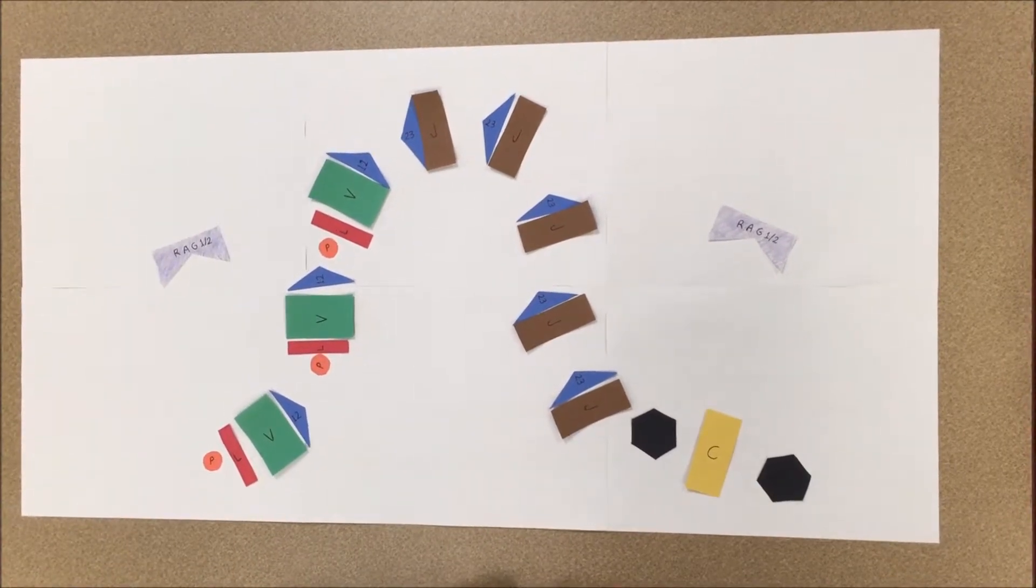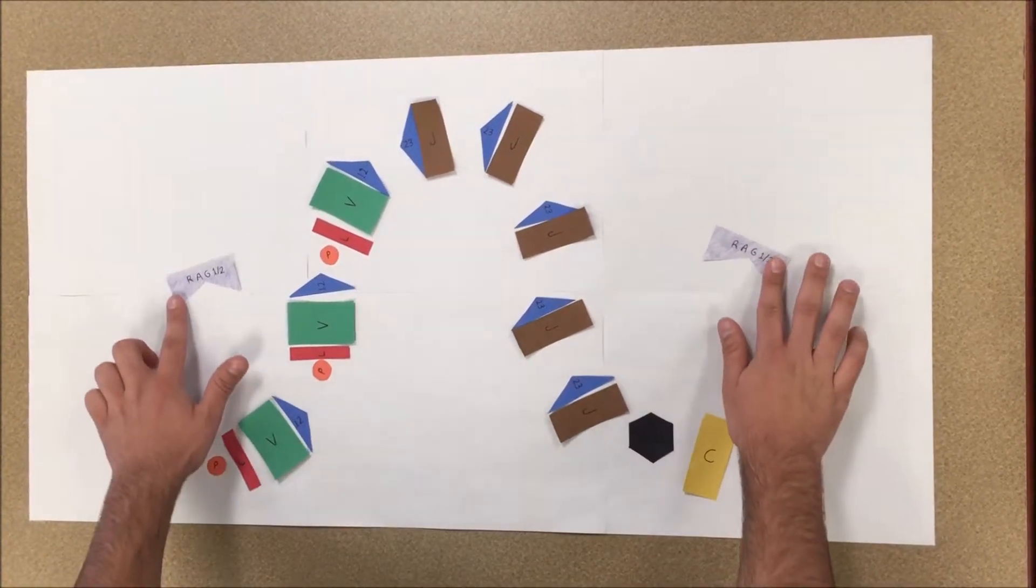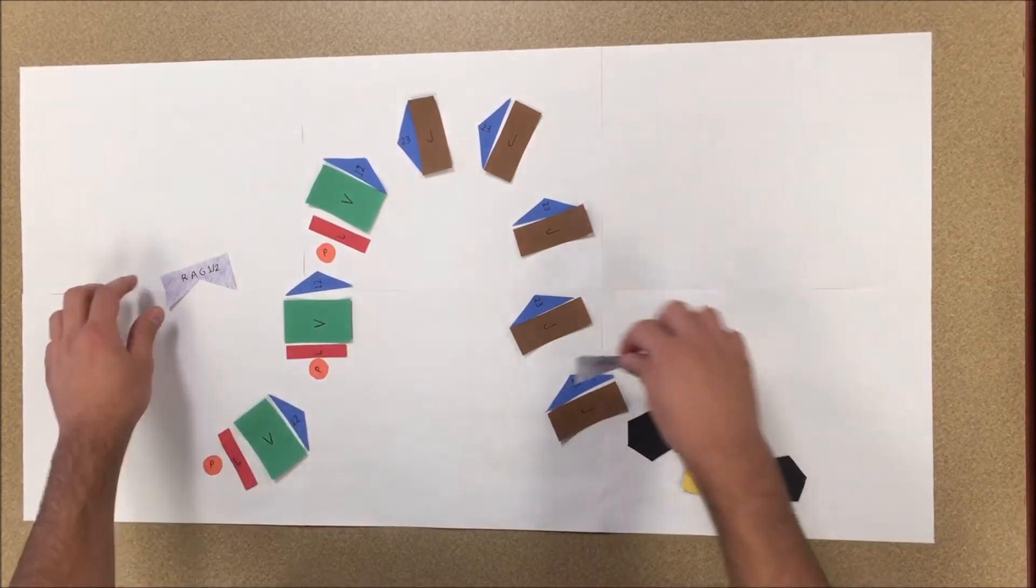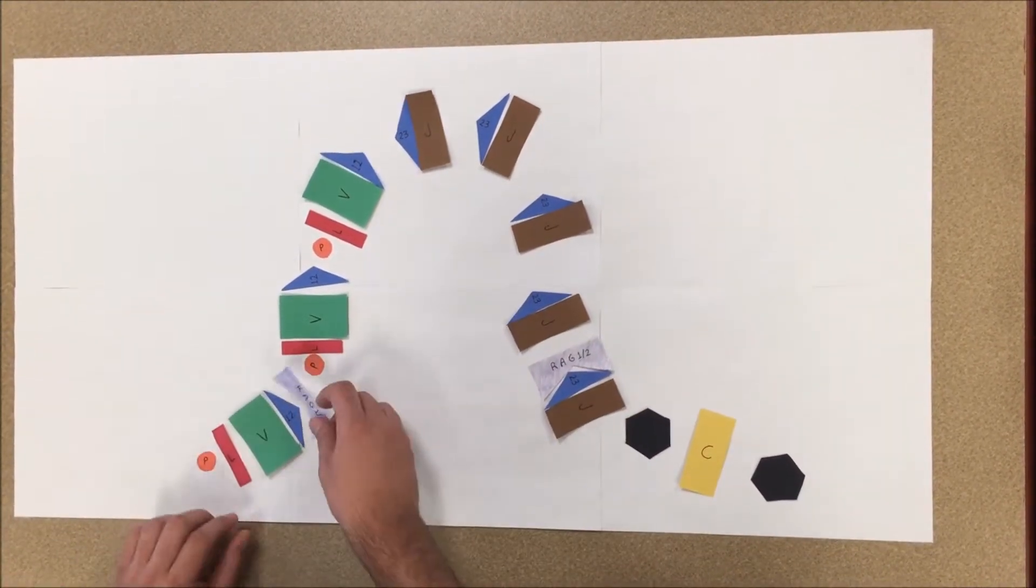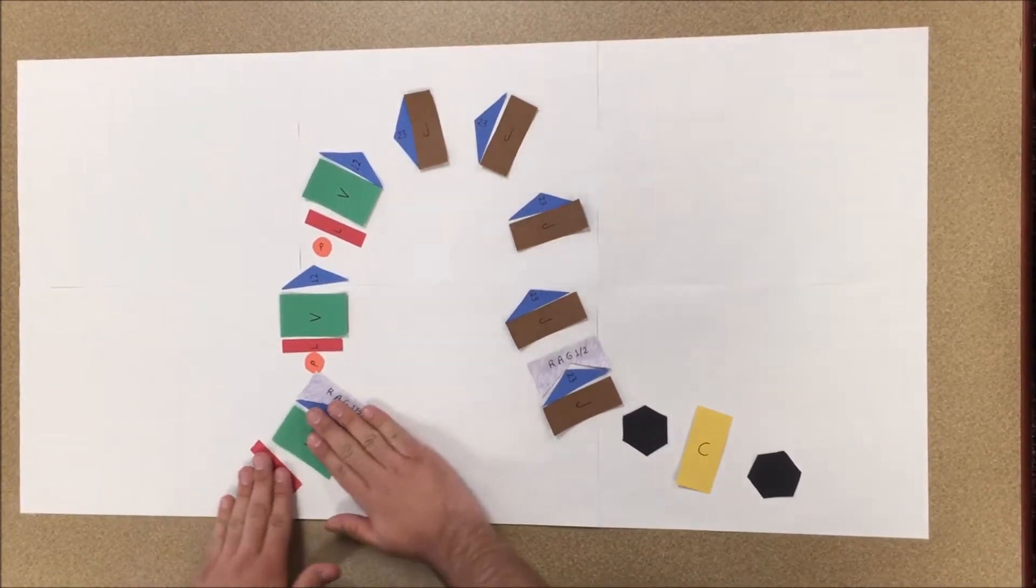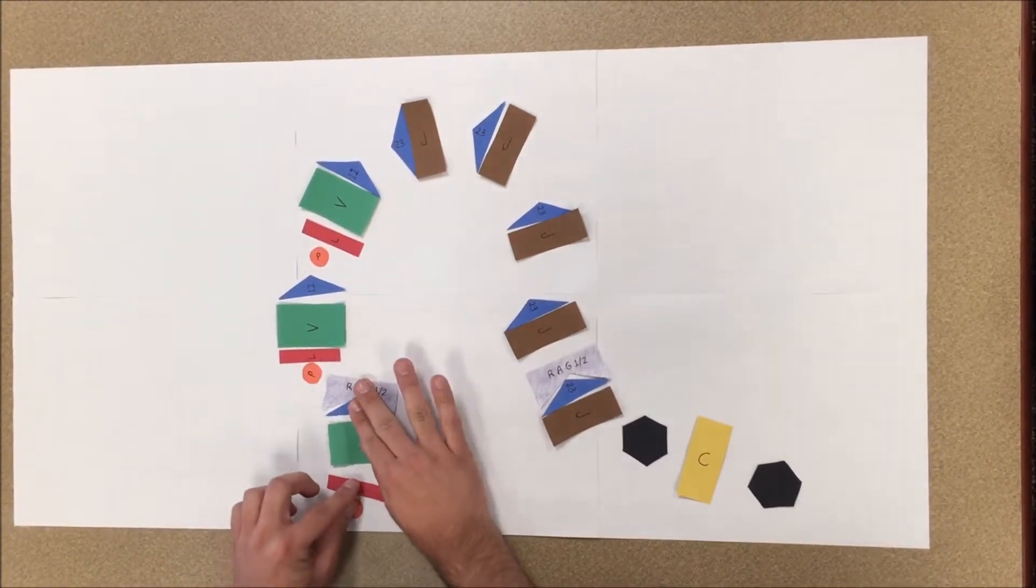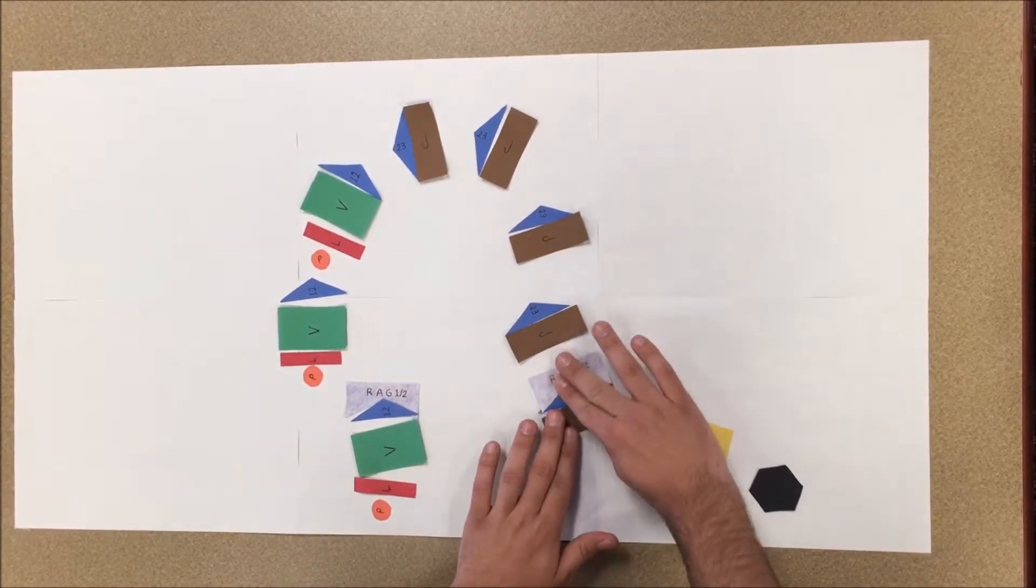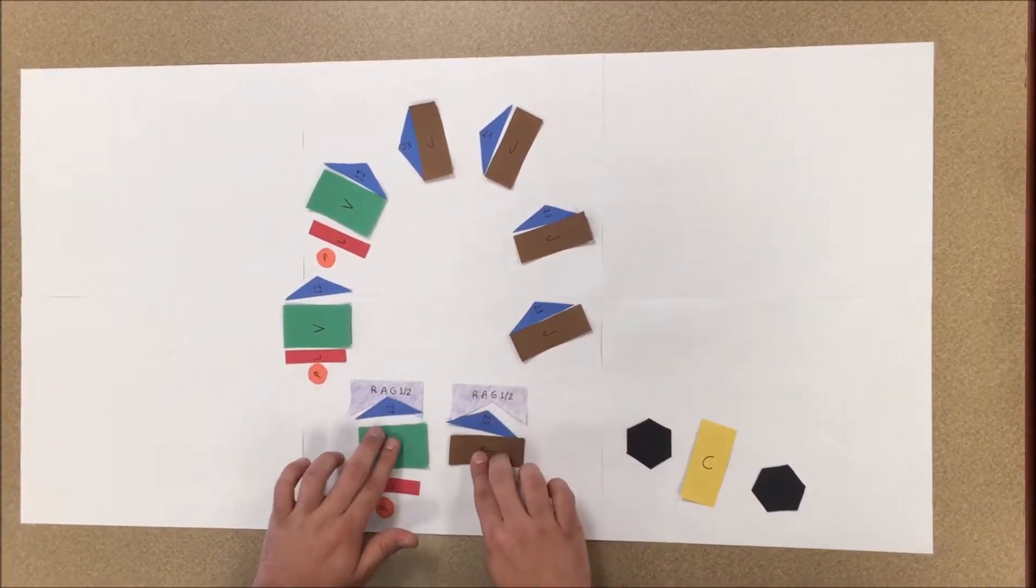RAG1 and RAG2 bind a variable region and a joining region. While joining these regions, the 12-23 rule must be obeyed, meaning an RSS containing a 12-base spacer must be paired with a 23-base paired spacer RSS.